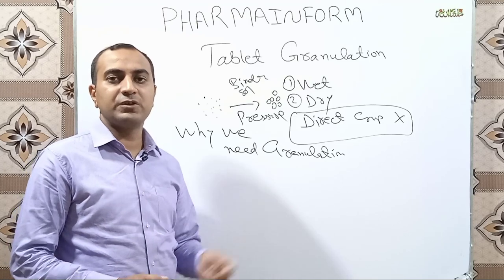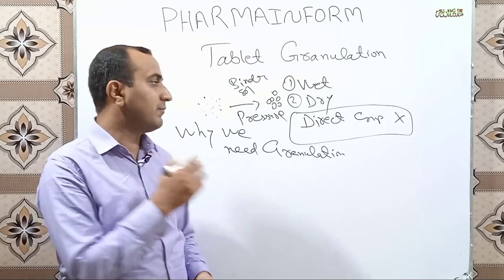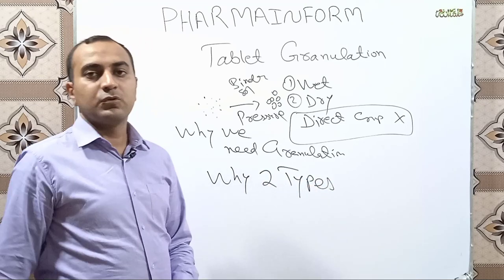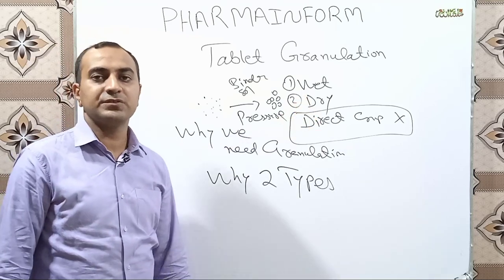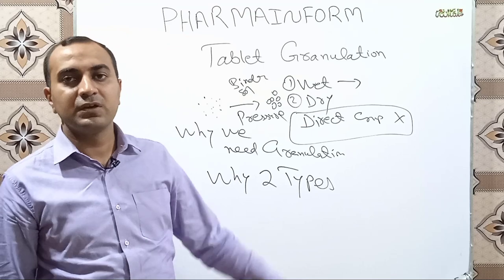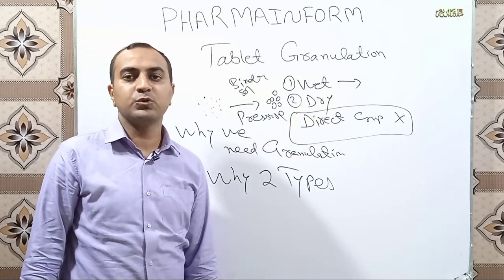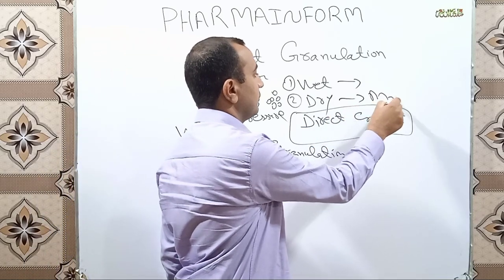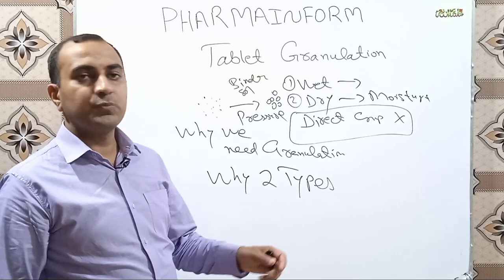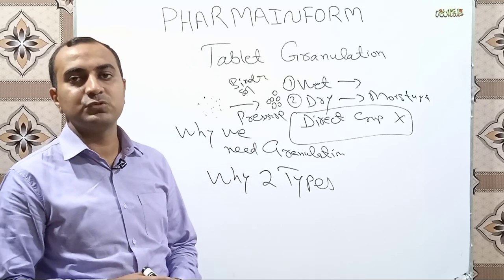The next question is why we have two types of granulation — wet and dry. The answer is that they are specific to product nature. Wet granulation is used for products that are not degraded by moisture or heat. Dry granulation is used for products that are moisture sensitive and heat sensitive — products degraded by moisture and heat are manufactured by dry granulation.